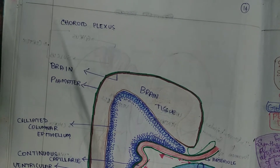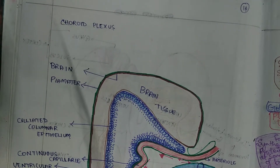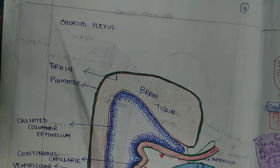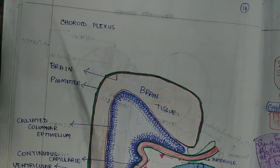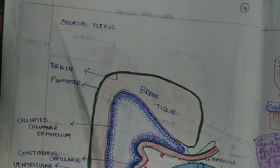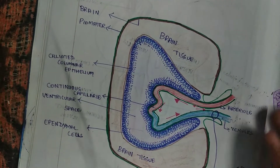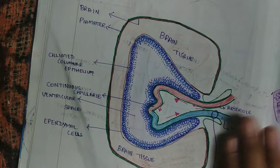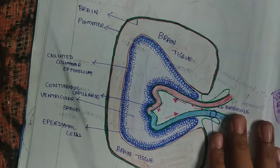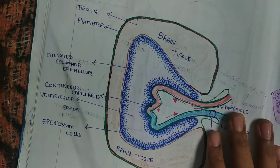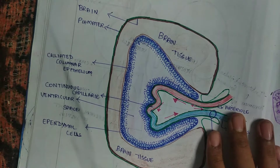In this video we are going to see about choroid plexus. So what is it? It is nothing but a tuft of capillaries or tuft of blood vessels that is present in the brain. Basically we know brain is having continuous capillaries, and at the same time brain is also having empty spaces like ventricles. Inside the ventricles there will be choroid plexus present.